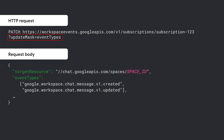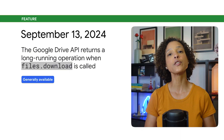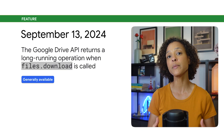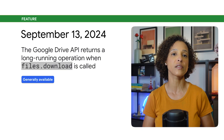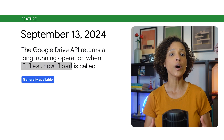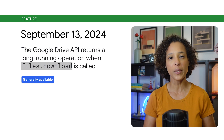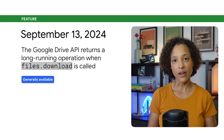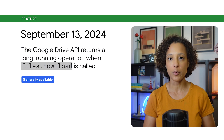In this example, using the EventTypes field in the UpdateMask parameter of the Subscriptions.patch method, we are setting two event types that we want for our existing subscription. The Google Drive API returns a long-running operation every time you call the files.download method to download blob file content or export Google Workspace document content, either through the Drive API or its client libraries.